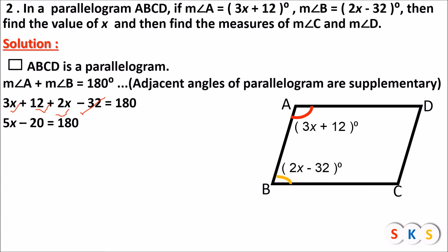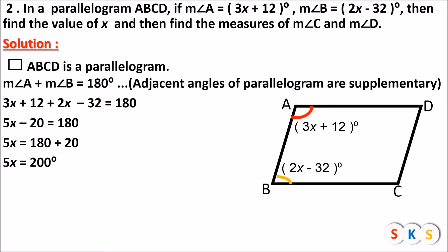Now we shift minus 20 to the other side of the equals sign. So we get 5x equals 180 plus 20. Adding 180 with 20 gives 200. So 5x equals 200. Shifting 5 to that side, x equals 200 divided by 5. Dividing 200 by 5 gives 40. So x equals 40 degrees. Now this value will help us find angle C and angle D.